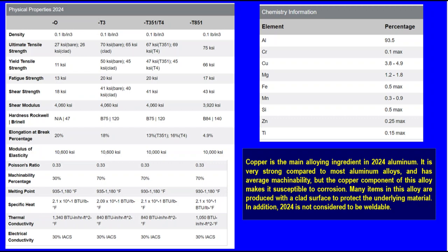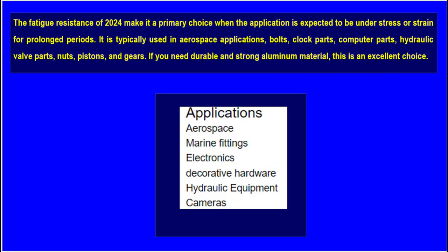Comparing physical, mechanical, and other properties, 2024 aluminum alloy has excellent mechanical properties and fatigue strength. Four temper variants — T0, T3, T4, and T851 — are shown with their mechanical, physical, fatigue, thermal, and electrical properties. The fatigue resistance of 2024 makes it the primary choice for applications expected to be under stress or strain for prolonged periods. It is typically used in aerospace applications, bolts, clock parts, computer parts, hydraulic valve parts, nuts, pistons, and gears.